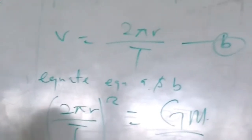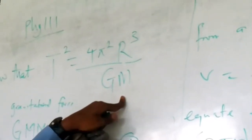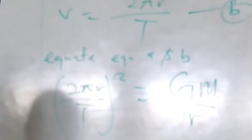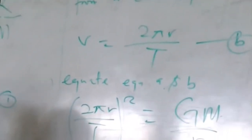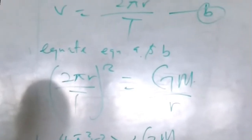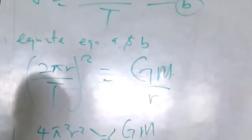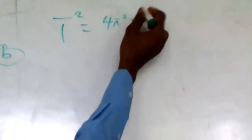We are trying to get T² on its own. So T² times GM equals 4π²r² times r, which gives T² times GM equals 4π²r³. Dividing both sides by GM, we are left with T² equals 4π²r³ over GM. That is the formula — T² equals 4π²r³ over GM.